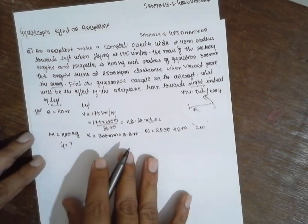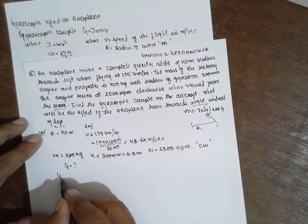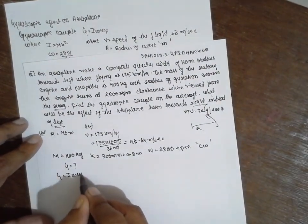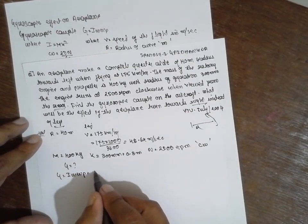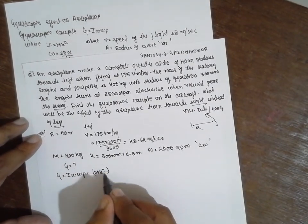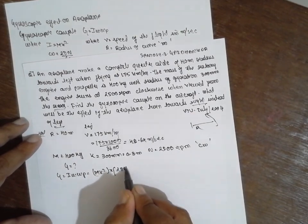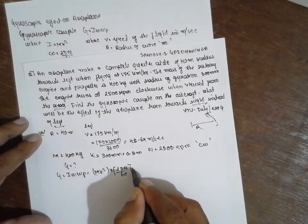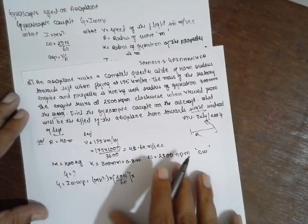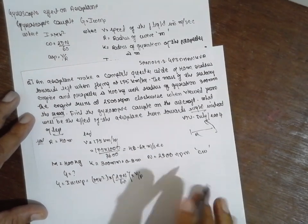What is the formula here? Formula will be G is equal to I omega omega P where I is nothing but M K square into 2 pi N divided by 60 into V by R. Substitute the values here.